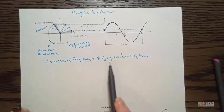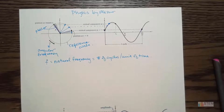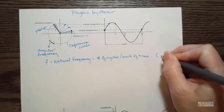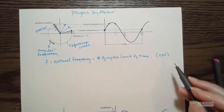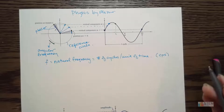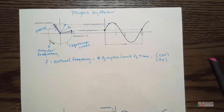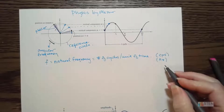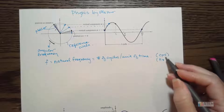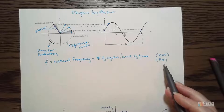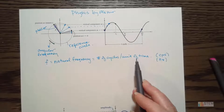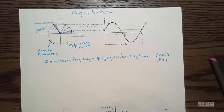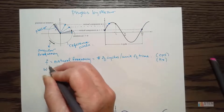Natural frequency is just the number of cycles we get per unit of time, and usually the unit of time is seconds. The unit you'll see is cps — cycles per second — and you might also see hertz. A hertz is just a cycle per second. So that is our natural frequency, which just tells you how many cycles you get per unit of time.